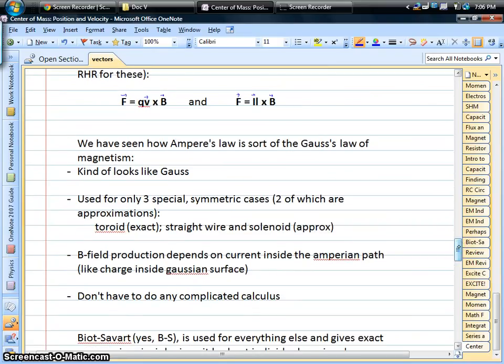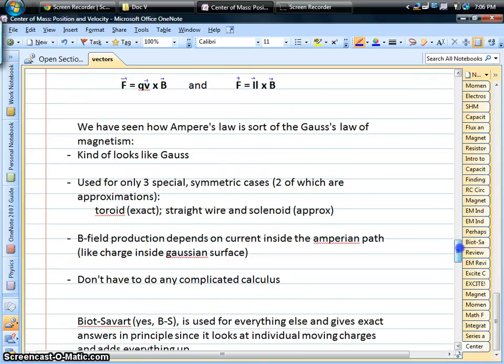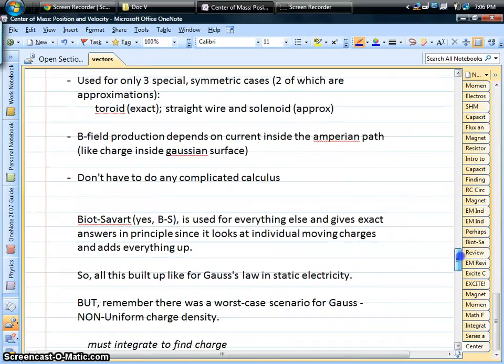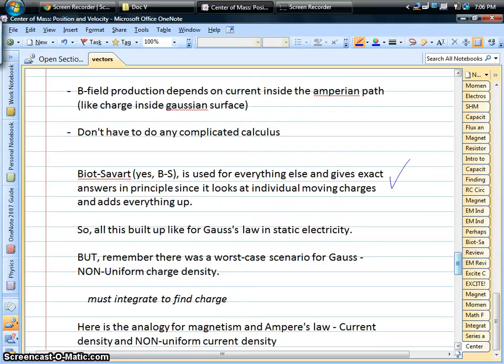With Ampere's law, it's a lot like Gauss. We used it for only three cases like Gauss's law, and those were the toroid, straight wires, and solenoids. But the straight wires and solenoids we approximated by making them long and not worrying about ends. It depends on the current inside a particular region, kind of like Gauss's law depends on charge inside a certain region. And with these three cases, we really didn't have to do much in the way of calculus. The so-called path integral is reduced down to something nice and neat. Once we get beyond those three shapes, again, like Gauss's law, it gets tougher. We actually do have to do integrals, and that's where this Biot-Savart rule comes into play, and that's what we use for every other shape.